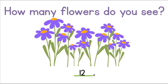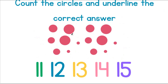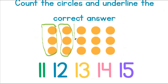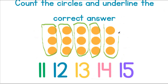How many circles do we see? 1, 2, 3, 4, 5, 6, 7, 8, 9, 10, 11, 12, 13, 14. 14. Let's do the same thing here, but this time let's count in groups of 3s. 3, 6, 9, 12, 15. We can see 15 orange circles.